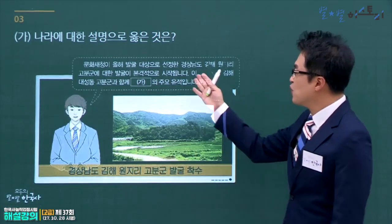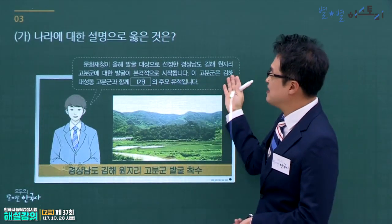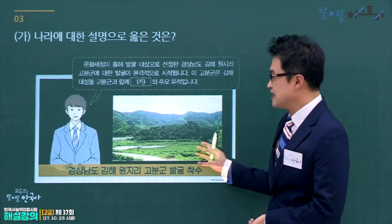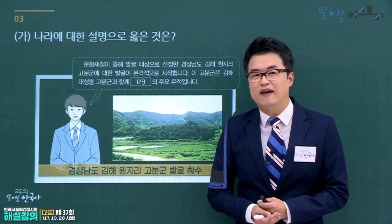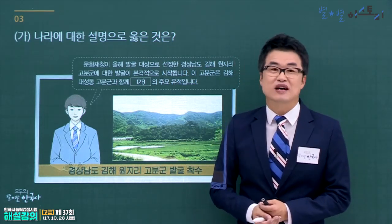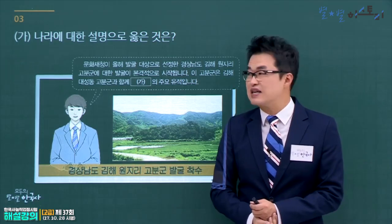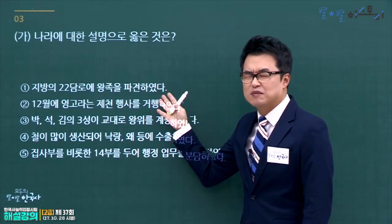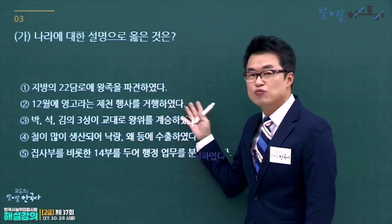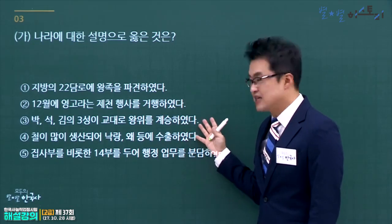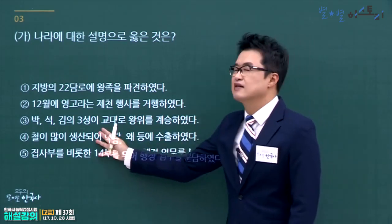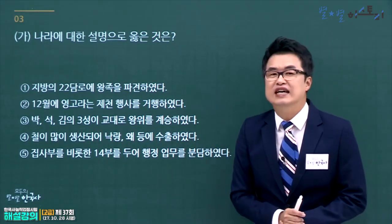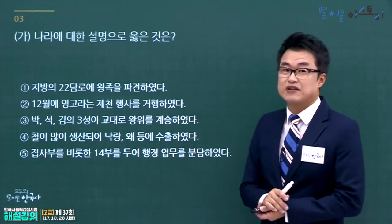3번 문제, 김해 발굴 작업이 이루어지는 지역은 가야, 특히 금관가야입니다. 가야에 대한 설명으로 옳은 것을 고릅니다. 22담로 왕족 파견은 백제 문주왕, 영고는 부여, 박·석·김은 신라의 왕성, 집사부를 비롯한 14부는 신라입니다. 철을 낙랑과 왜에 수출한 것이 가야의 특징으로 정답은 4번입니다.